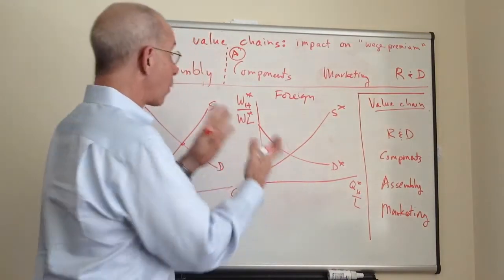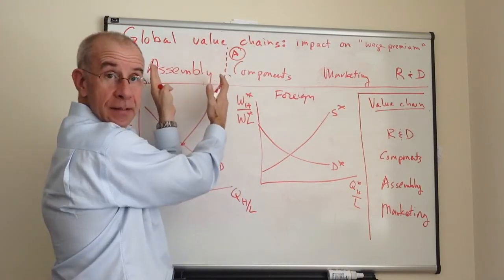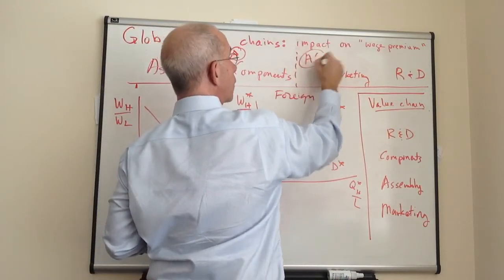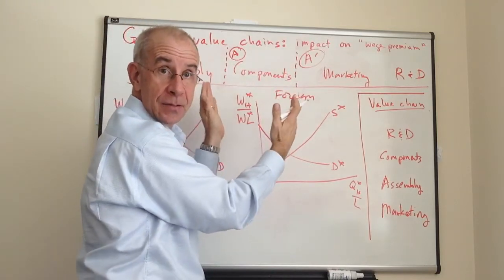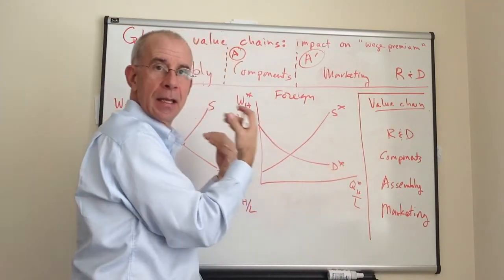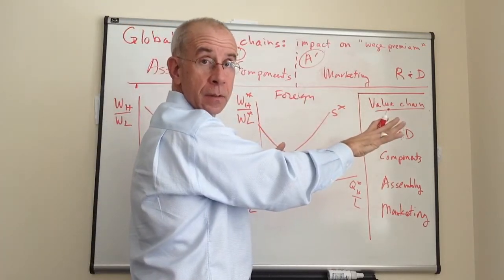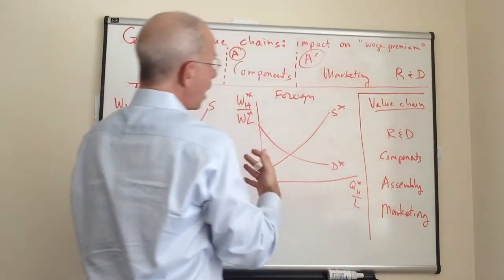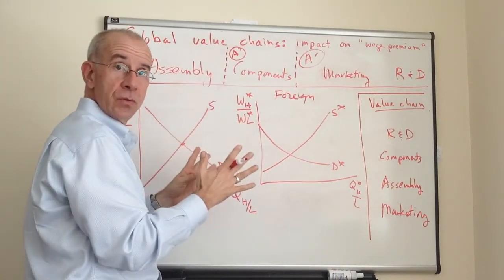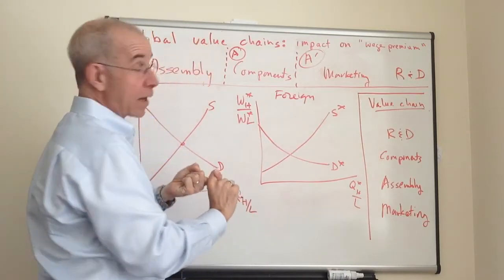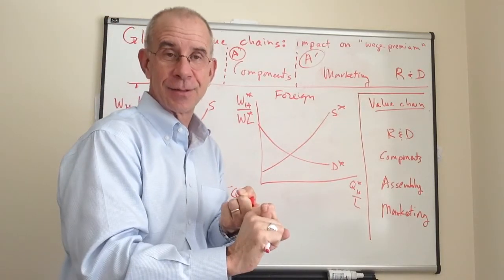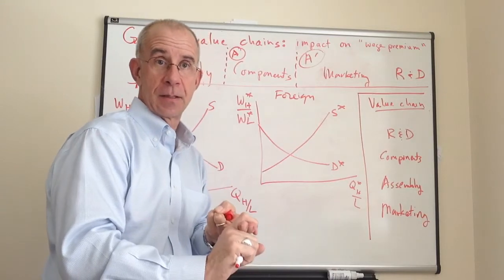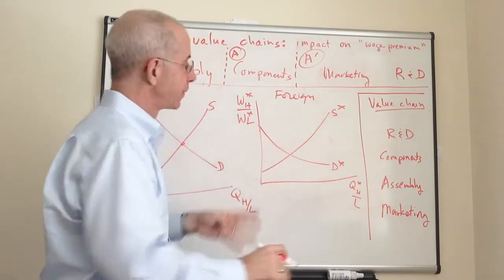The bottom line is we want to imagine a situation where the range of activities that take place in the foreign country expands. So the foreign boundary moves to A-prime, meaning a greater range of tasks — including higher-skilled tasks — now takes place in the foreign country, and fewer of those relatively low-skilled tasks take place in the home country. We now want to think about how this increased demand for relatively high-skilled work in the foreign country and a drop in demand for low-skilled activities in the home country affects wages.